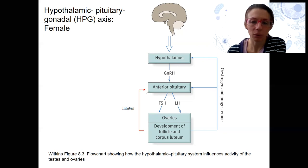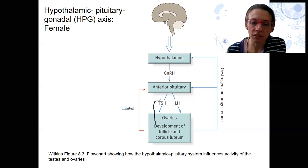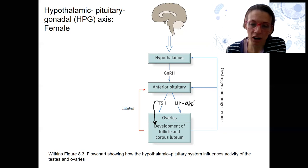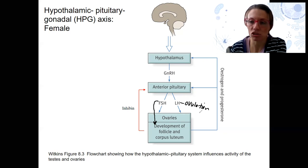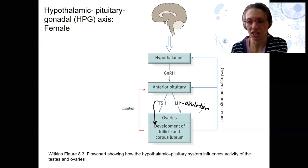FSH is going to be involved in the development of the follicle. But really, LH is going to be the trigger for ovulation — it's going to trigger the release of the egg from that mature follicle, that ultimate burst, which is ovulation, the release of the egg.